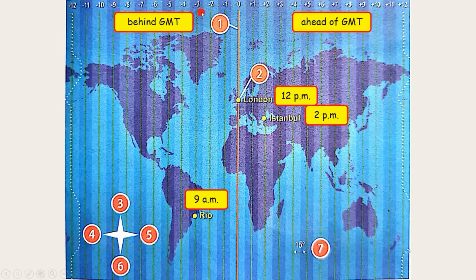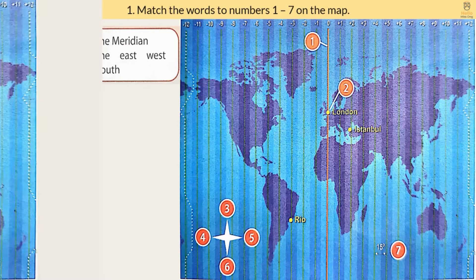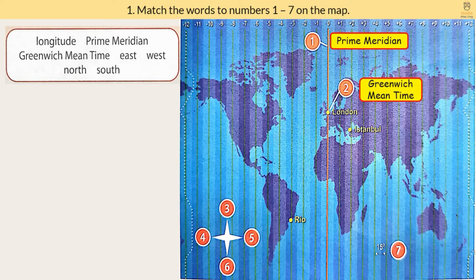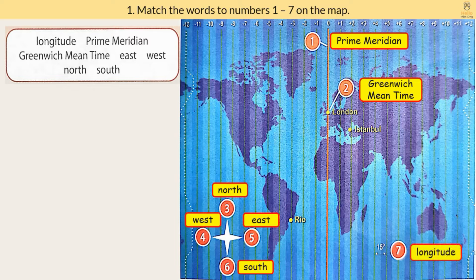GMT minus 3 hours gives you 9 a.m. I hope you are able to understand this. Now, match the words to numbers 1 to 7 on the map: 1. Prime Meridian, 2. Greenwich Mean Time, 3. North, 4. West, 5. East, 6. South, 7. Longitude.